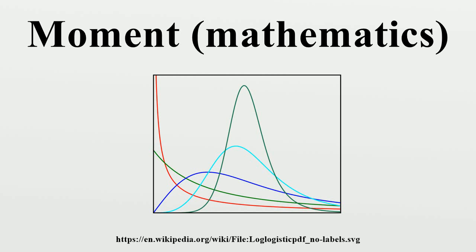If the points represent mass, then the zeroth moment is the total mass. The first moment divided by the total mass is the center of mass, and the second moment is the rotational inertia.